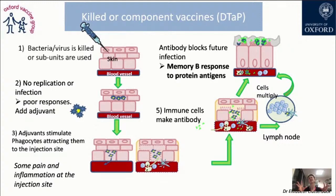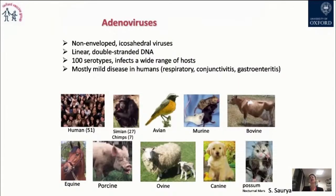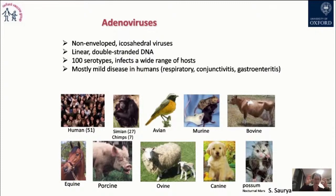Vaccines must have a danger signal — and it's a balance between a good signal and a safe vaccine. Now I'll turn to the vaccine developed by the Jenner Institute and the Oxford Vaccine Group against COVID-19. This is a subunit vaccine focusing only on the spike protein of SARS-CoV-2 — just one protein on the outside of the virus — and it is inserted as a genetic sequence into an adenovirus.